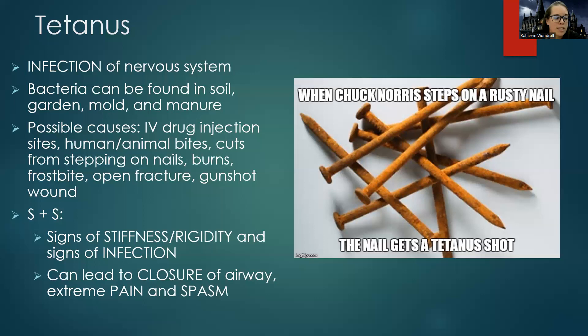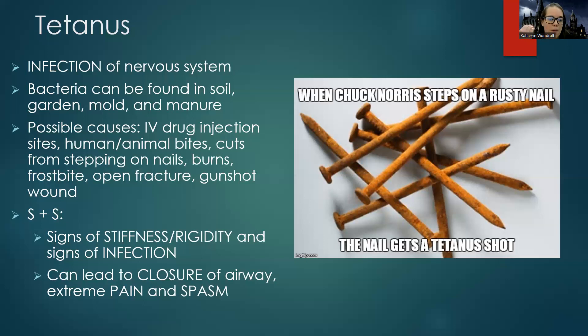When tetanus sets in, there are going to be signs of stiffness and rigidity throughout the entire body — it's a neurological infection. They have a lot of neck stiffness, and there's a lot of concern around the airway when it comes to stiffness and rigidity. There are also signs of infection since it is a bacterial infection. It can lead to spasm or closure of the airway, and it's super painful.